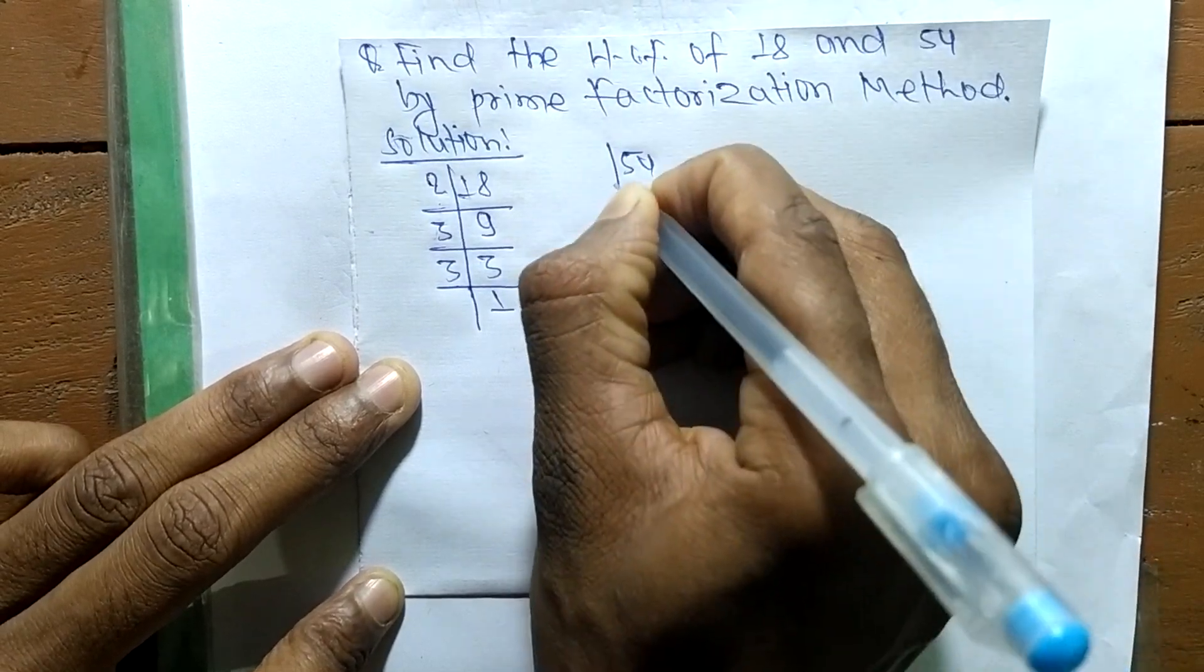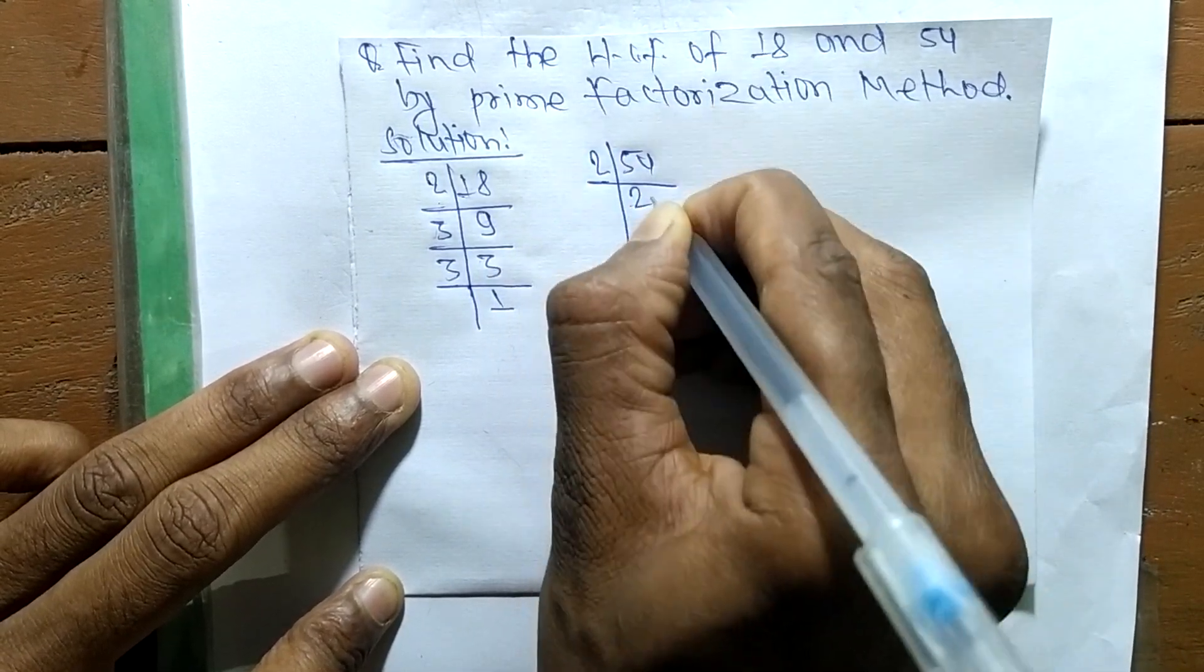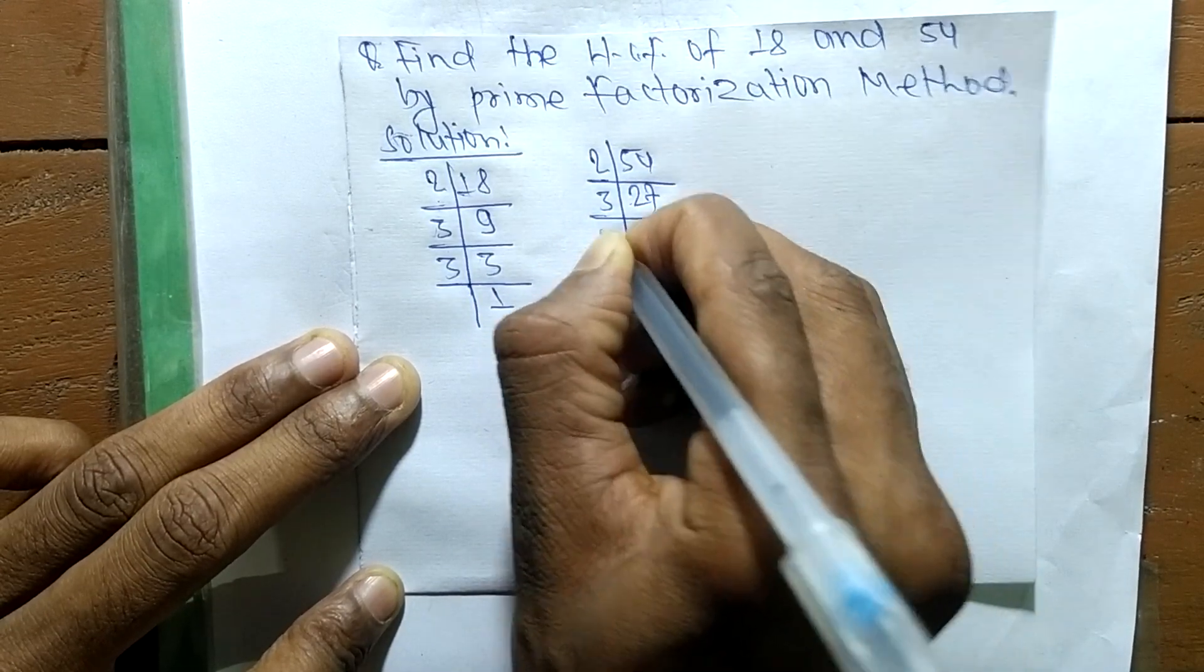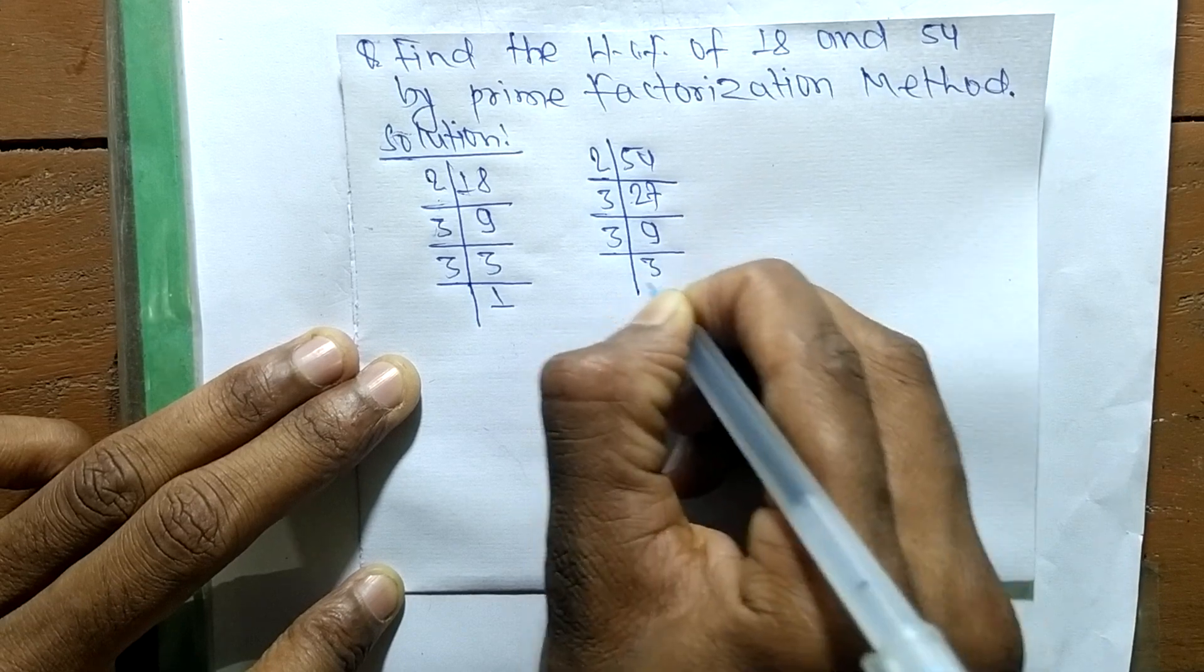of 54 are: it is 2 times 27 means 54, 3 times 9 means 27, 3 times 3 means 9,